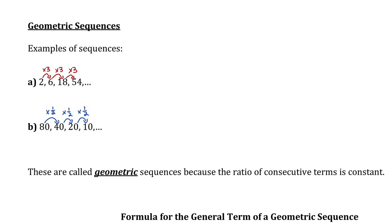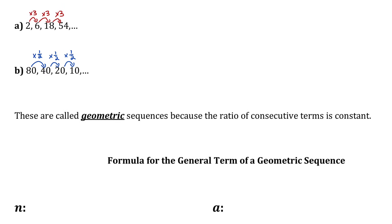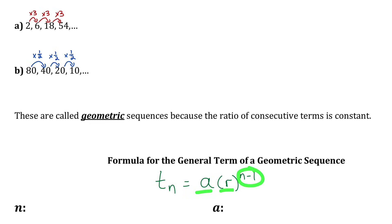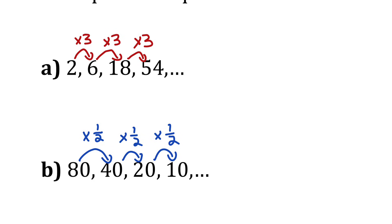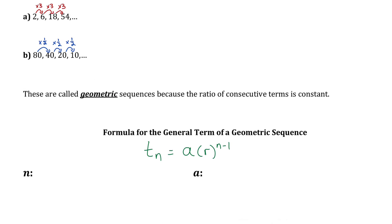The formula for the general term of a geometric sequence is fairly similar to that of an arithmetic sequence. To get the value of any term, you take your first term a, but instead of adding, you multiply it by the common ratio r, n minus one times: Tn equals a times r to the power of n minus 1. The exponent tells you how many factors of the base you have. To get the fourth number, you multiply the first number by the common ratio three times.